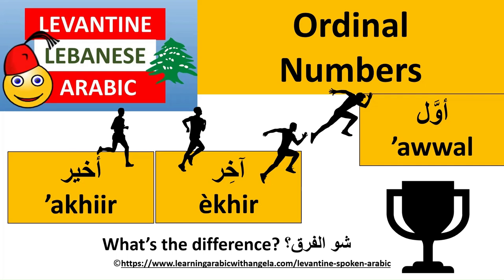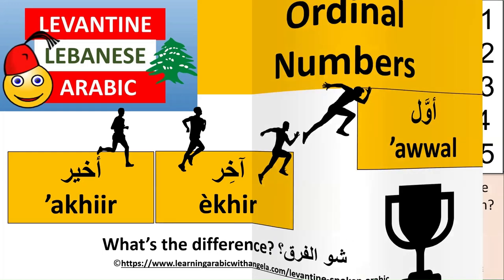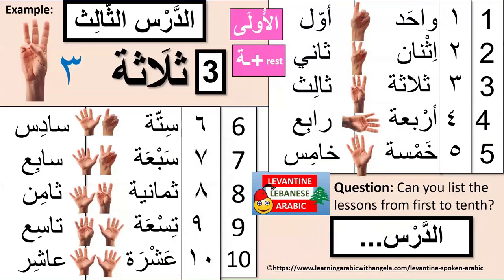In this lesson we're going to speak about ordinal numbers and explain the difference between أخير and أخر in Arabic. يلا نبالش — let's begin. First, let's review cardinal and ordinal numbers.